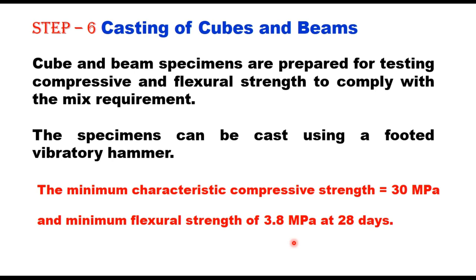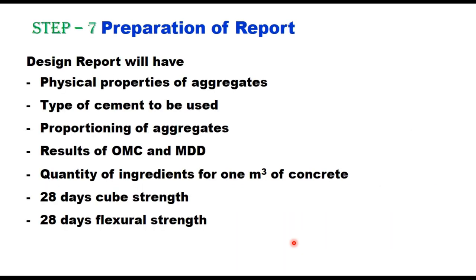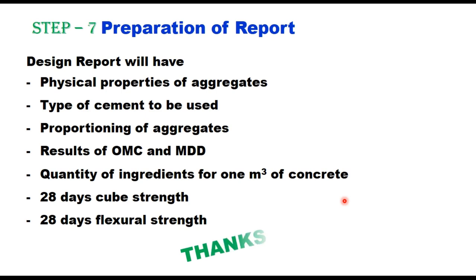Finally, a design report is prepared containing: physical properties of aggregates, type of cement and admixture to be used, proportioning of aggregates, results of OMC and MDD from the proctor test, quantity of ingredients for one cubic meter of concrete, and 28-day compressive strength and 28-day flexural strength. Thank you — I hope you have understood the design of mix for roller compacted concrete. Please write your comments in the comment box.